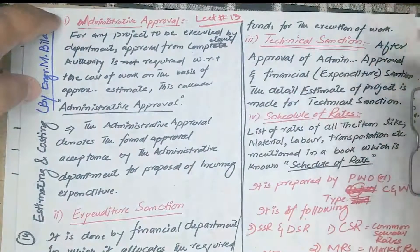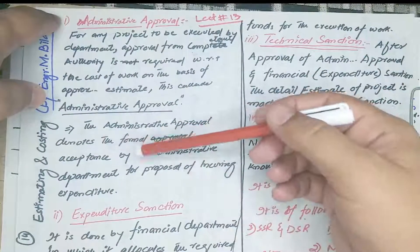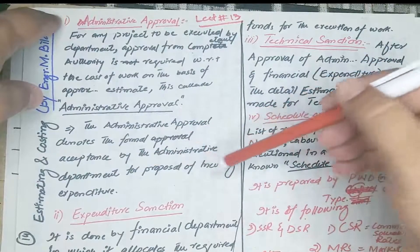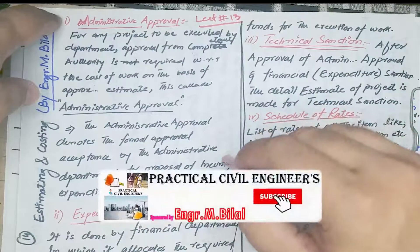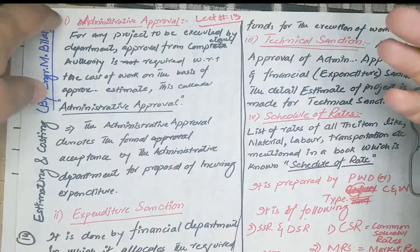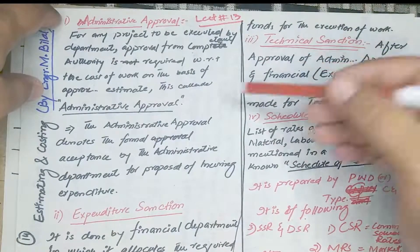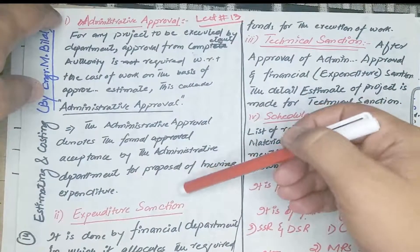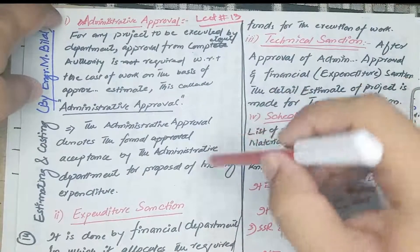The Administrative Approval denotes the formal acceptance by the Administrative Department for the proposed incurring of expenditure. The Administrative Approval is just for the purpose of allocating the fund for the project. After the Administrative Approval, we need the expenditure sanction from the Finance Department.